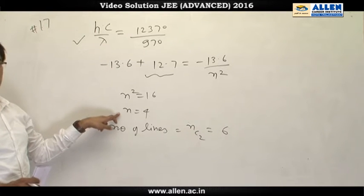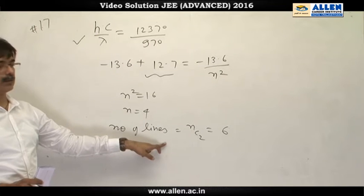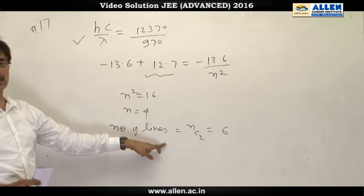Since excited state is N equal to 4, the number of lines emitted will be NC2, that is 6. So our answer is 6.